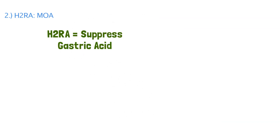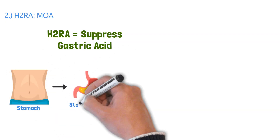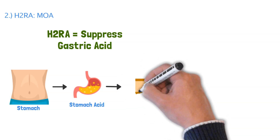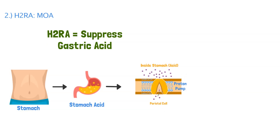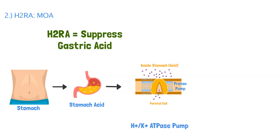Now let's dig a little deeper into the actual mechanism of action. H2RAs suppress gastric acid — they lower the amount of stomach acid. Looking at the stomach, zooming in, we have stomach cells lining the stomach, and specifically parietal cells. These parietal cells have a pump that pumps hydrogen for potassium, meaning more hydrogen — being acidic — is pumped into the stomach acid. These pumps are why we have stomach acid.